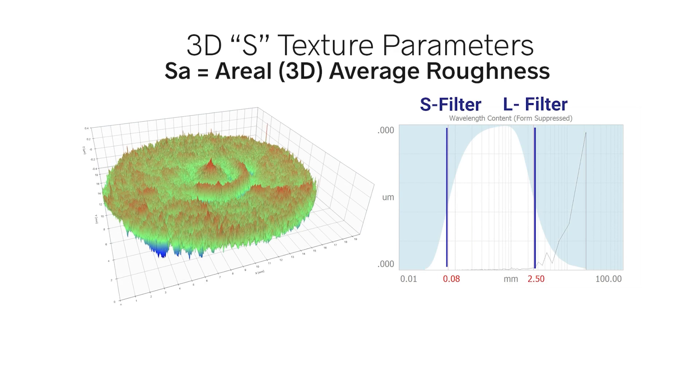filter out the short and long wavelengths, measure the absolute distance from each point to the plane, then average all the distances for the surface.